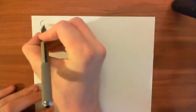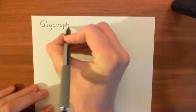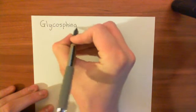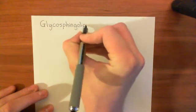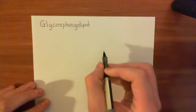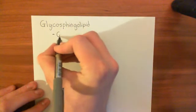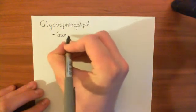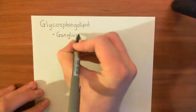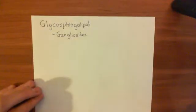One of the major components of lipid rafts are molecules collectively known as glycosphingolipids. I want to explain what a glycosphingolipid is. There's a specific type of glycosphingolipid very common within lipid rafts known as a ganglioside, but we'll discuss that later. So let's start with what a glycosphingolipid is.